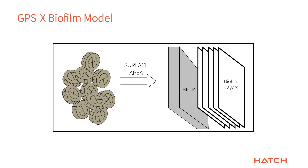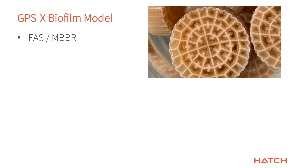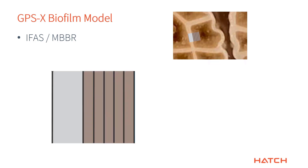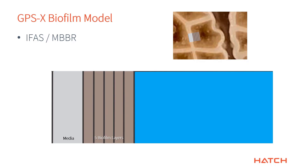In an IFAS/MBBR model, that outer biofilm layer is in contact with all the rest of the liquid, which is assumed to be completely mixed outside that reactor. So basically you have five biofilm layers and then the bulk liquid layer. I tried to give a physical representation of this: taking a tiny slice of the plastic media, you can see those five biofilm layers standing on it. This is an average representation — we know layers vary in thickness — but it's the standard way of modeling these systems.